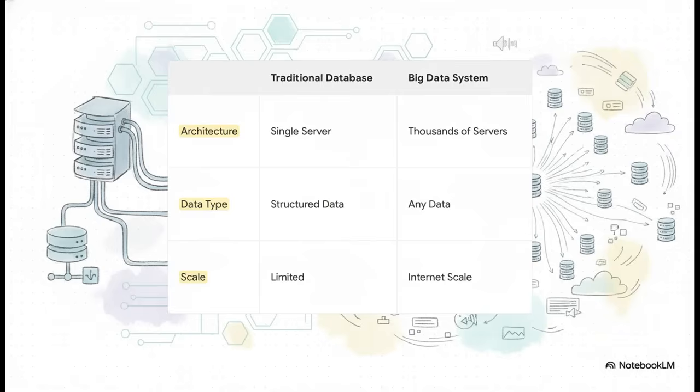That breaking point is the very reason big data systems were invented. On one side, you've got your traditional database. It lives on a single powerful server. It loves neat, perfectly structured data, but it has a ceiling. It can only get so big. On the other side, a big data system—a sprawling network of thousands of regular computers all working together, ready for literally any kind of data you can throw at it. It's built for internet scale.